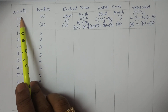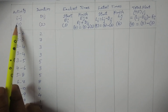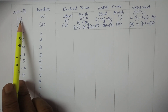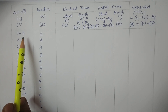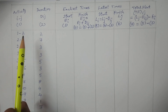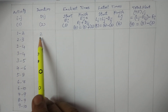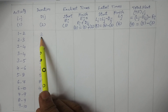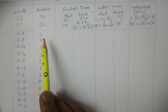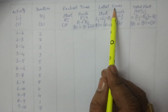We consider activity and duration which are given. Activity is represented as I to J, where I is the tail event and J is the head event. So one to two: if you connect two events, you get an activity. Duration DIJ is the time required to finish this activity — for example, activity one to two takes two days.